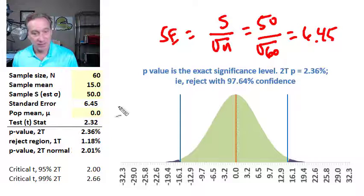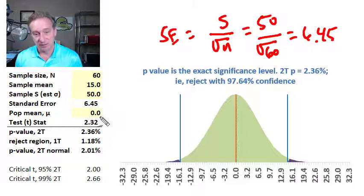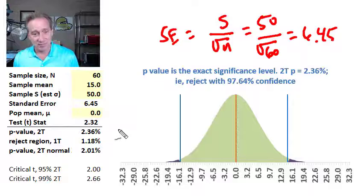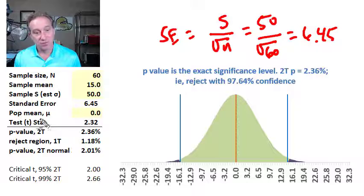The last thing we need to conduct a statistical test here of the sample mean, which is the most common type of statistical test, is our null hypothesis, or what we're hypothesizing is the true population mean.